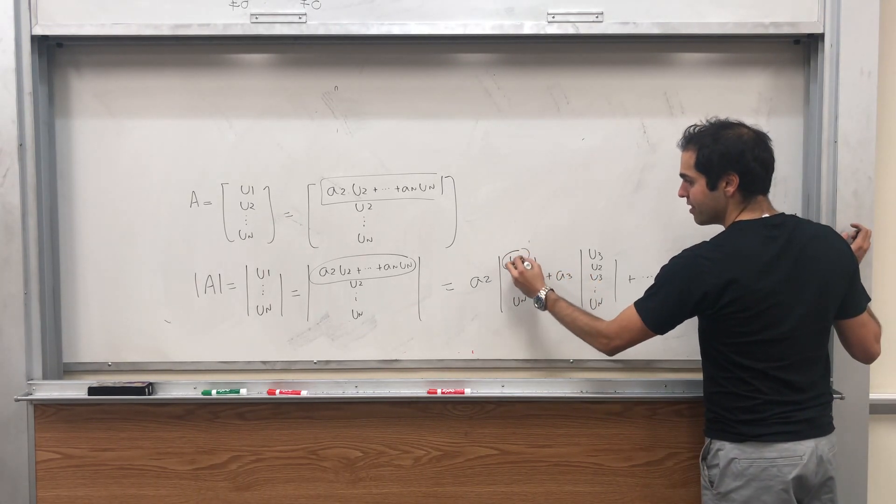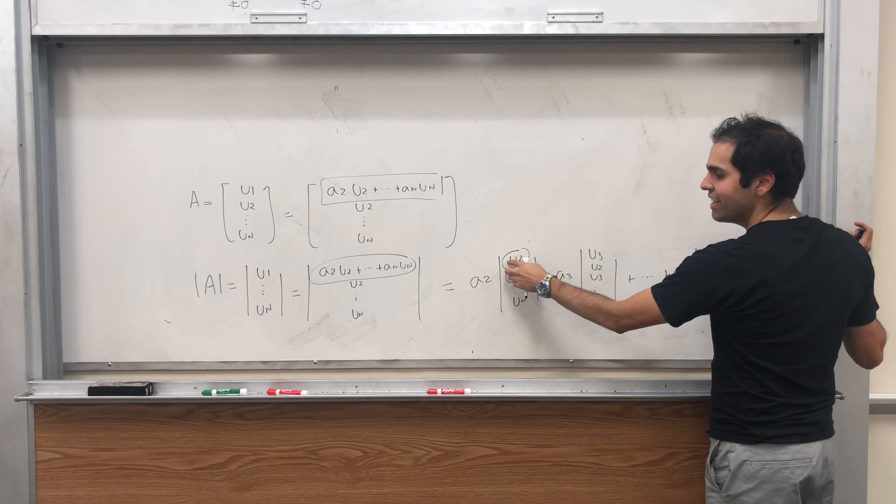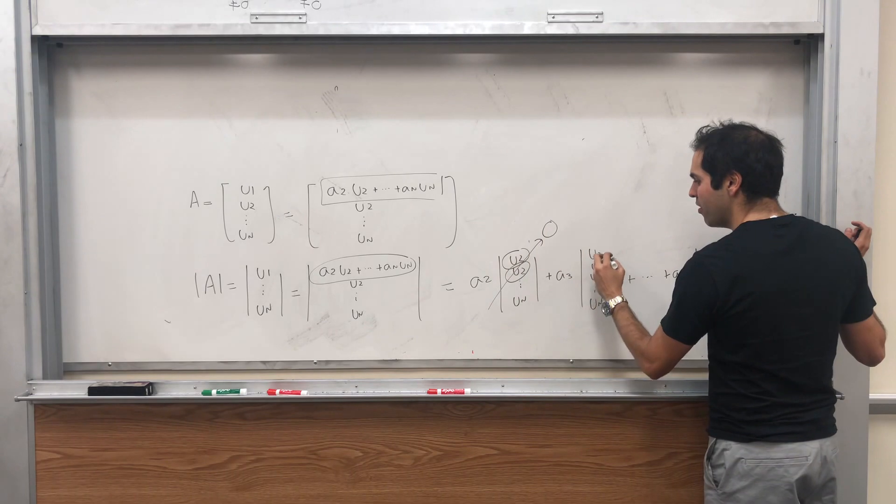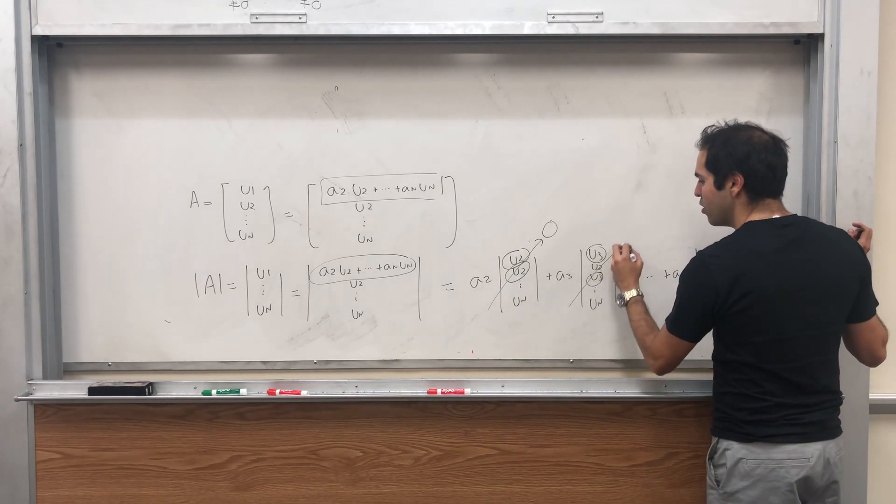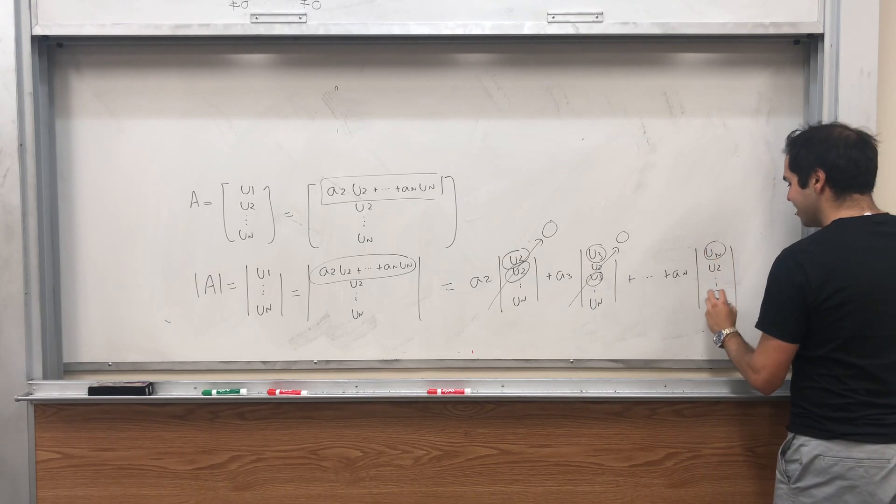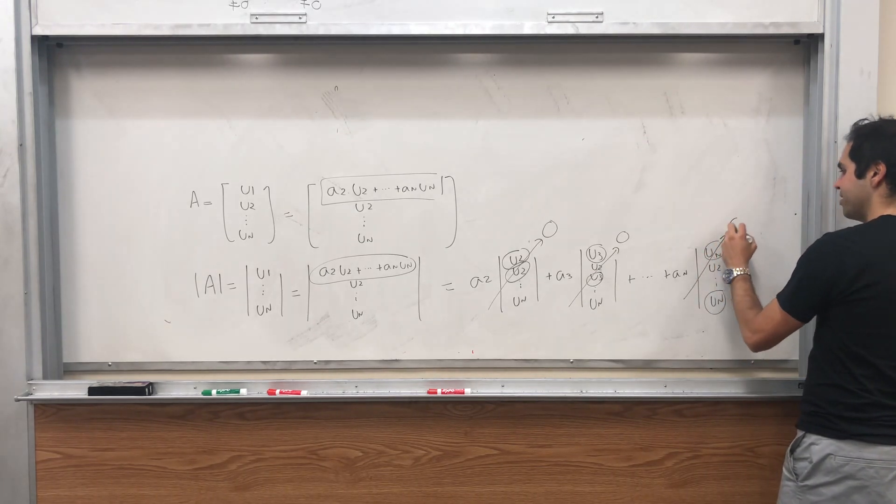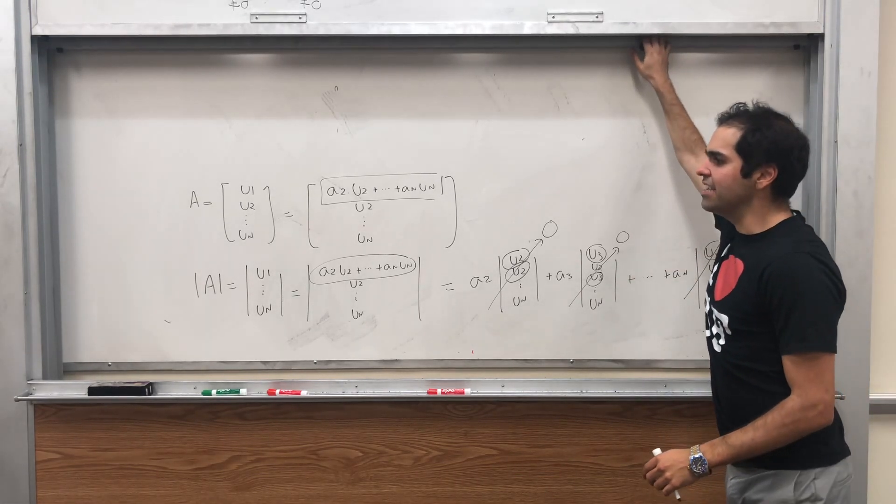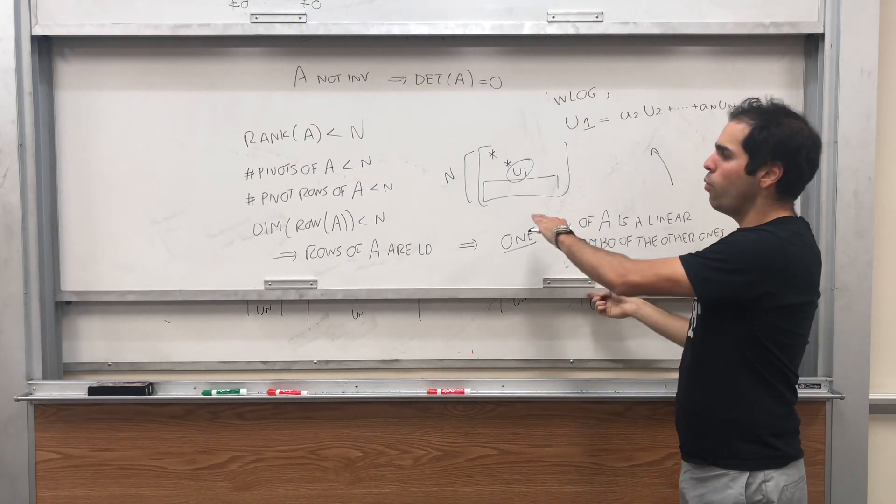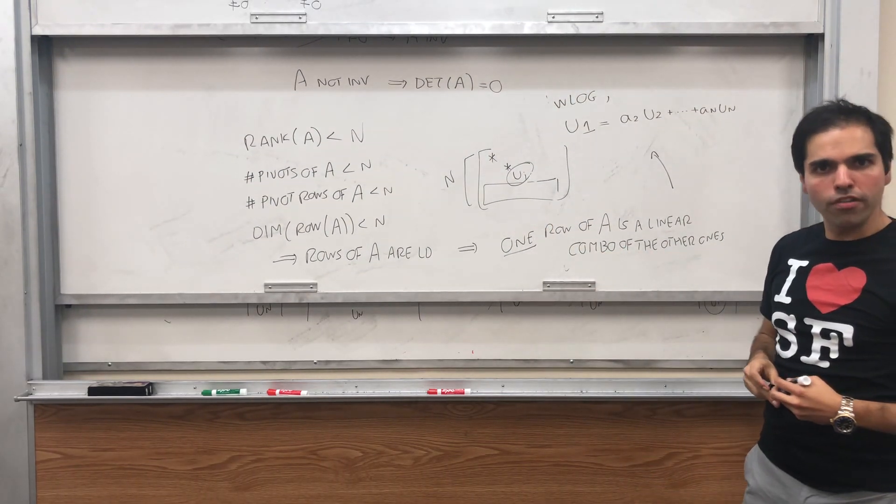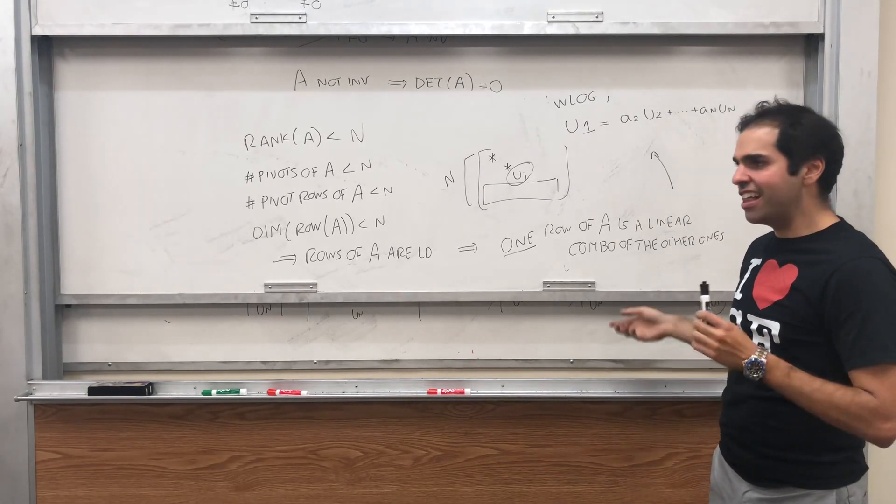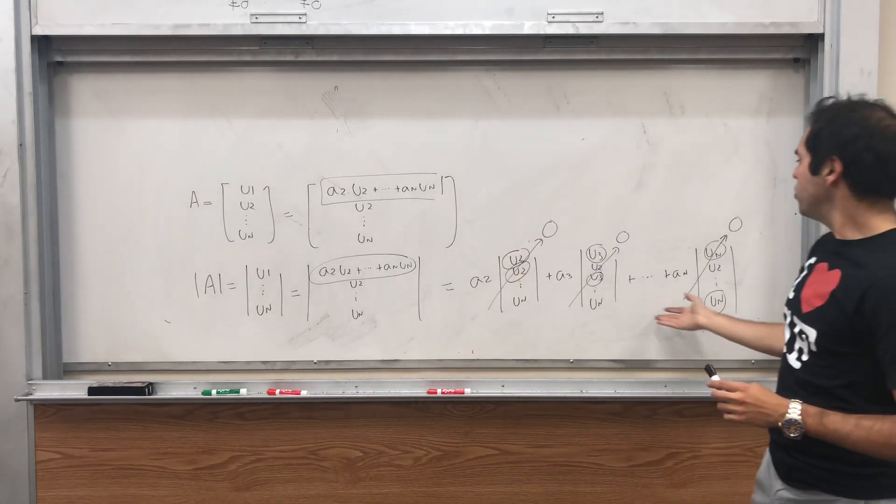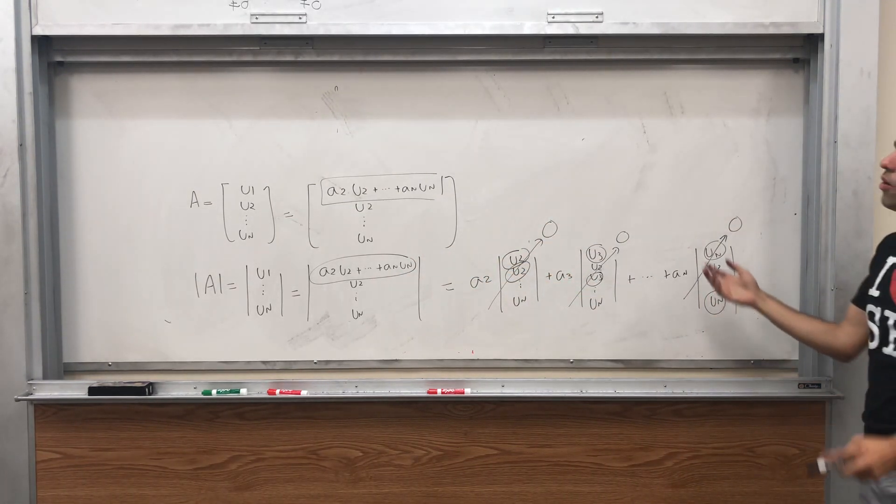And notice, this determinant, this matrix has two identical rows. So one of the properties of determinant says this is zero. This one also has two identical rows, so this is zero. And lastly, this has identical rows, so this is also zero. So in other words, what do we get? If A is not invertible, then one row is a linear combo of the other ones. Assume without loss of generality the first row.